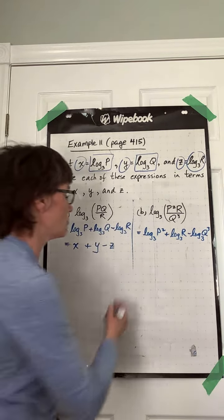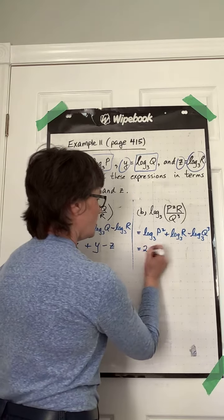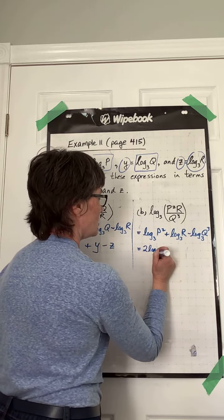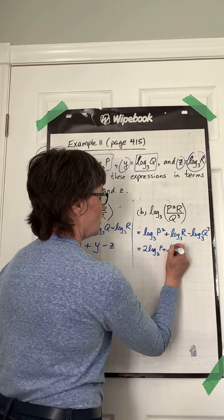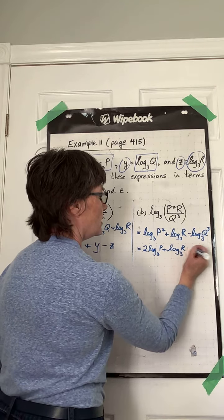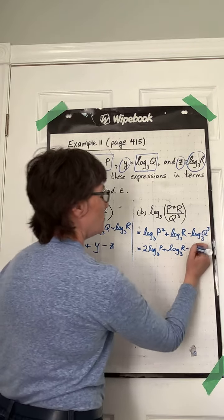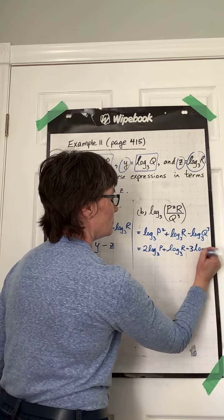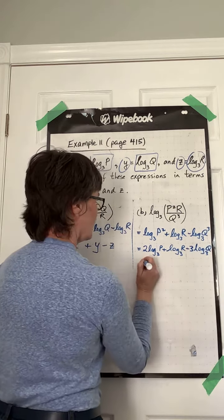Now using law number 3, we'll bring that square down in front as a coefficient. The second term stays the same. Bring that cube down in front as a coefficient.